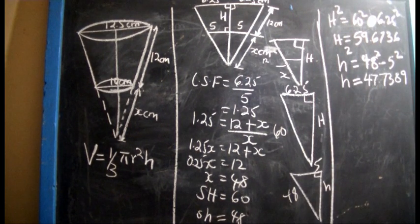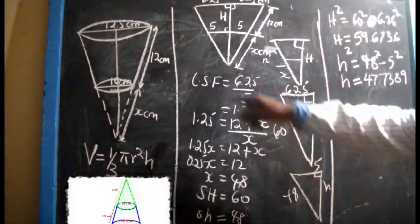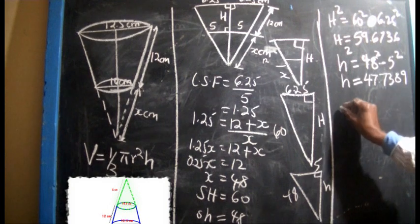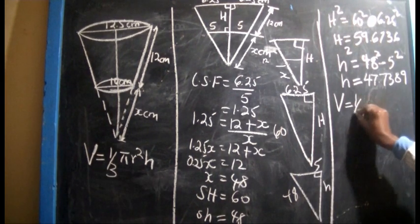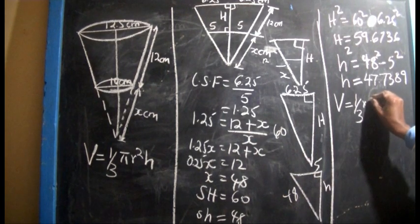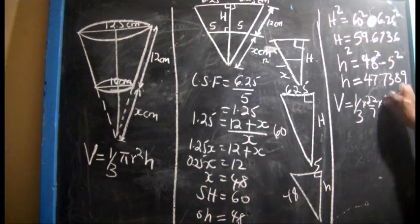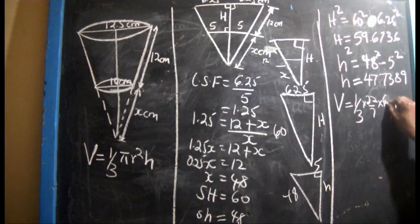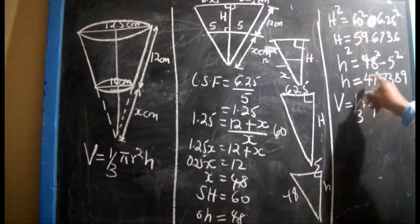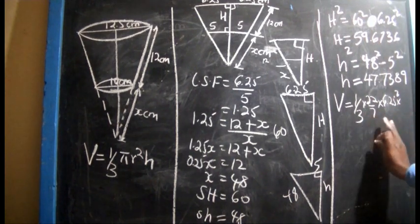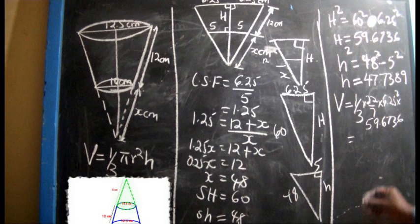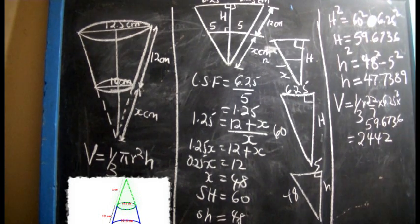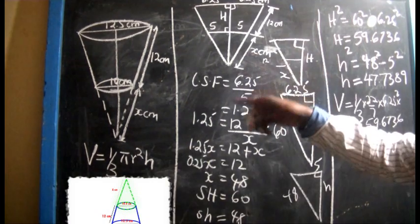Having found the heights, it is now easier to find the volume. First, we find the volume of the big cone — capital V equals one-third times 22 over 7 times 6.25 squared times H, where H is 59.6736. This gives capital V equals 2,442 cubic centimeters. That is the volume of the big cone, the whole cone.